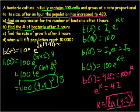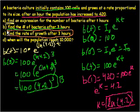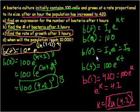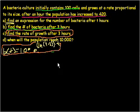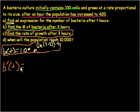Part C: find the rate of growth after 3 hours. They're essentially asking what is the slope of this function after 3 hours — in other words, what is the derivative at time t equals 3? Let's take the derivative of the bacteria function with respect to time. So B′(t) equals — using the chain rule — 100 is a constant out front, and we differentiate e to the ln(4.2)·t.